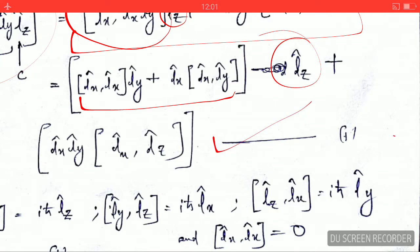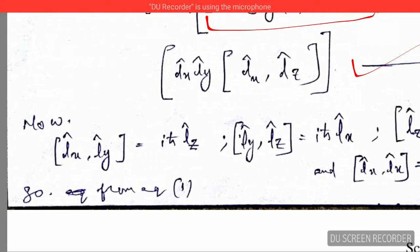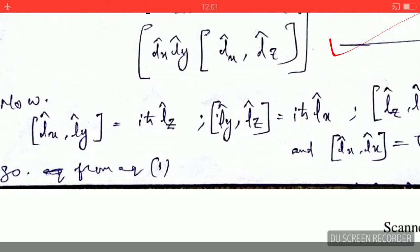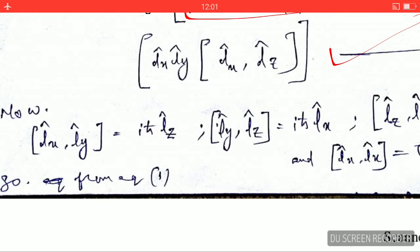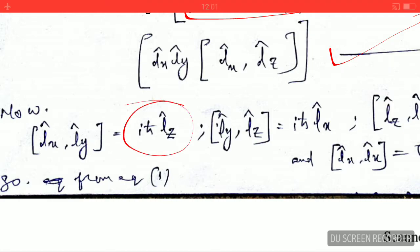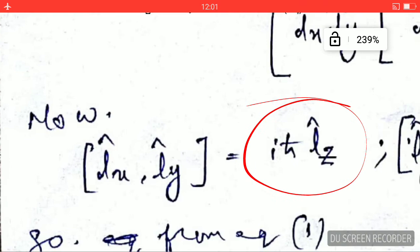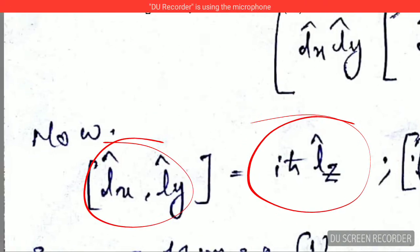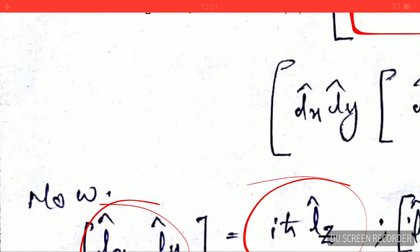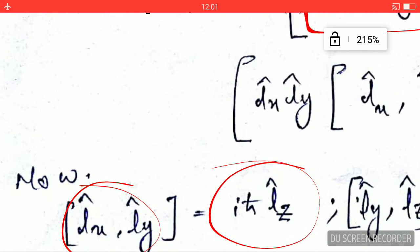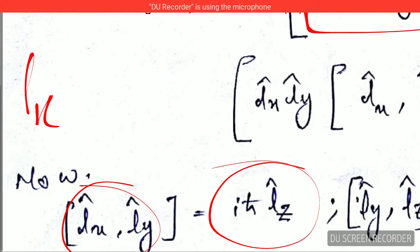At this point you need to know the basic formula: the commutator of Lx and Ly equals iℏLz. Now if you reverse these two terms — that is, writing [Ly, Lx] instead of [Lx, Ly] — something important happens.